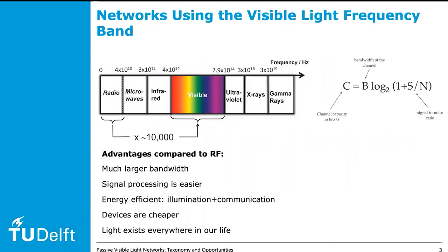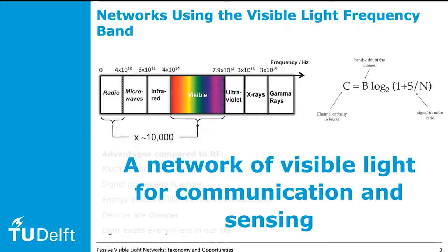One of the possibilities is using visible light. Compared to radio frequency, communication with visible light has several advantages: the bandwidth is much higher, the signal processing is easier, among many others. More importantly, we already have natural and artificial lights everywhere in our life. This infrastructure has enabled us to create a network of visible light for communication as well as sensing.